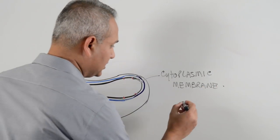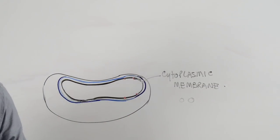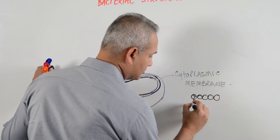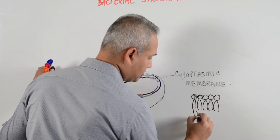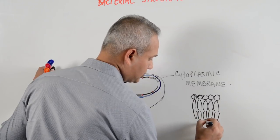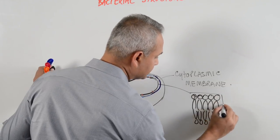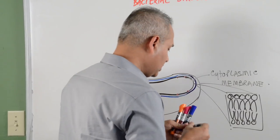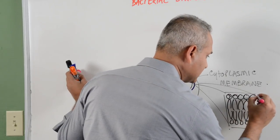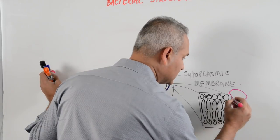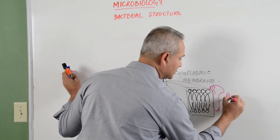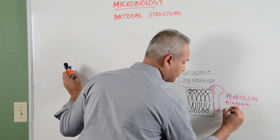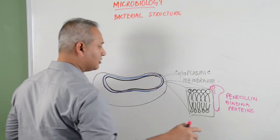The structure of this membrane, as we know it, is a lipid bilayer. The only addition here compared to other cells is that this membrane has penicillin binding proteins. When we talk about penicillin, we will discuss those in detail.